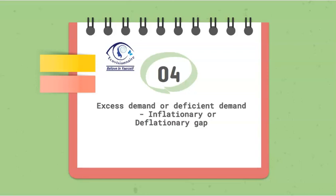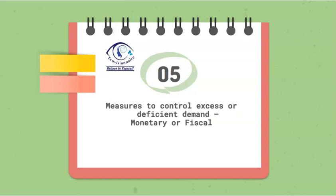Fifth topic, related to the fourth, is how to control the situation of deficit or excess demand — using monetary measures by RBI or fiscal measures. Monetary measures include repo rate, reverse repo rate, margin requirements, open market operations, and quantitative and qualitative measures. Fiscal measures involve explaining the government's taxation policy and expenditure policy to control the situation of excess or deficit demand. These last two questions are short questions for your exam, either in your school exam or in your boards.